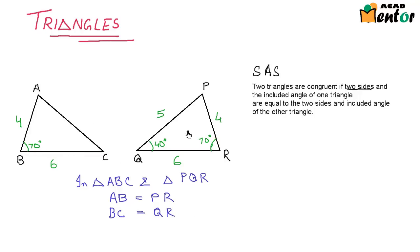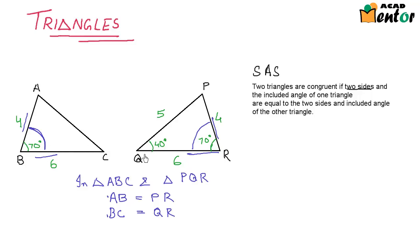Now I have to check the included angle as per the SAS criterion. When considering AB and BC in triangle ABC, the included angle must be the angle between these two sides, which is angle ABC. When considering PR and QR in triangle PQR, the included angle between these two sides is angle PRQ. Both are equal to 70 degrees, so angle ABC equals angle PRQ.